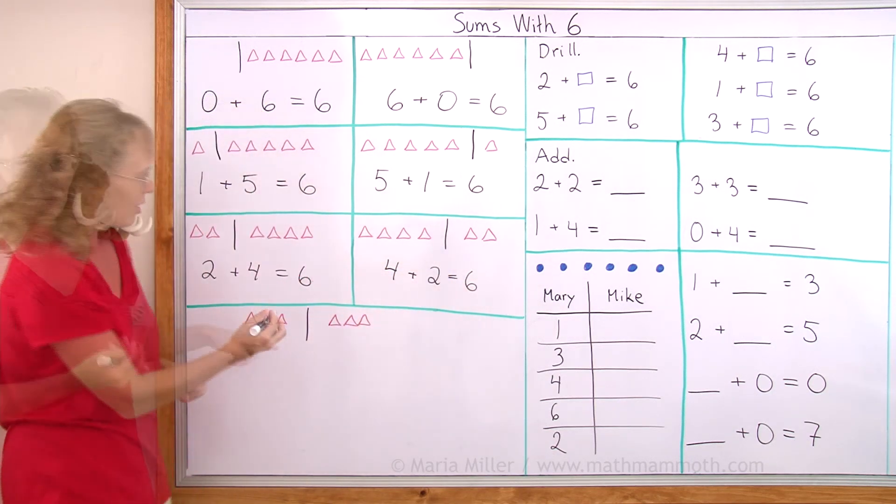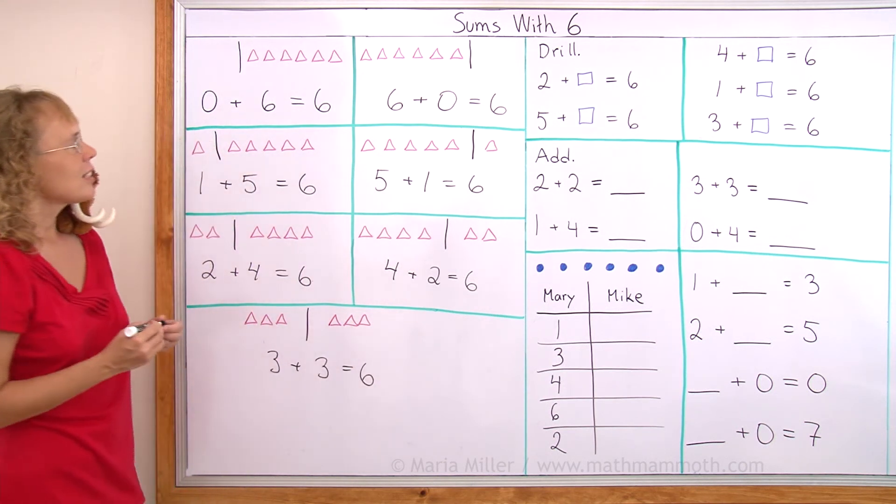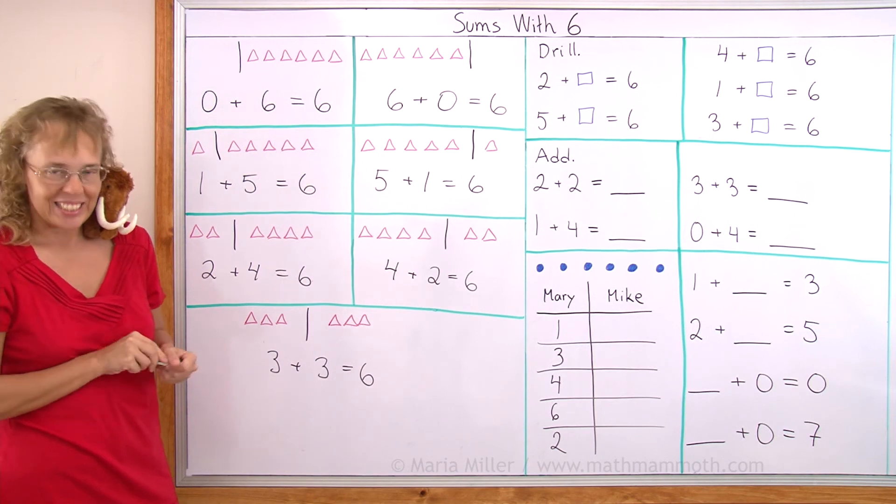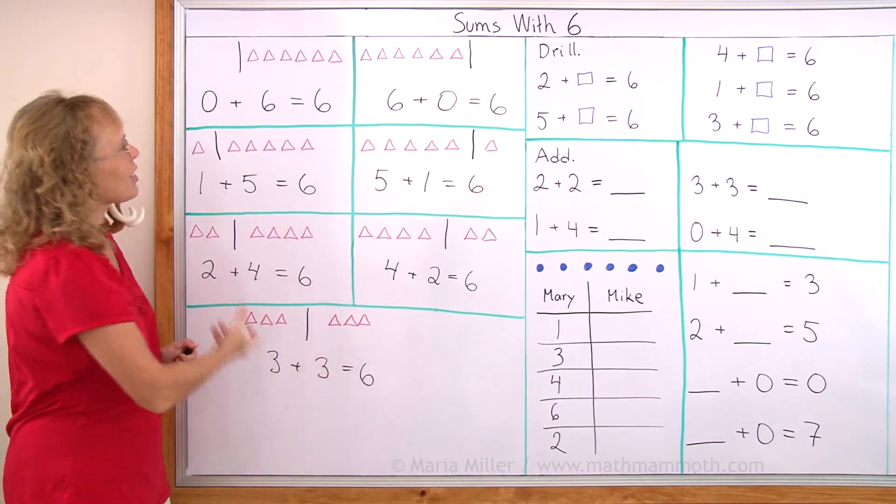And one last one. Three and three. Three plus three makes six. These are all the ways to make six with two numbers. And you need to remember them well. You need to learn these well.